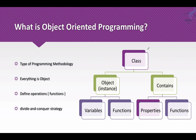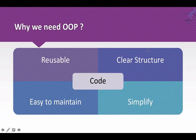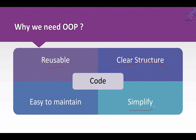Why do we need OOP? What are its advantages? If you are using an object oriented programming system, your code can be reusable, your code has a clear structure, and you can manage it very efficiently. Basically, the code becomes simple to read, simple to write, simple to manage, and easy to maintain.